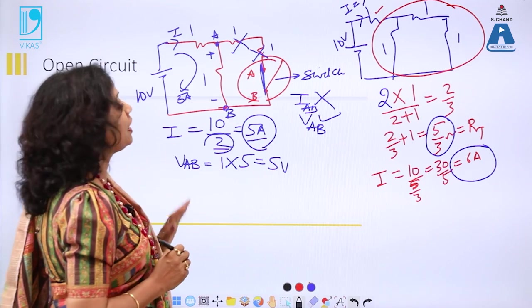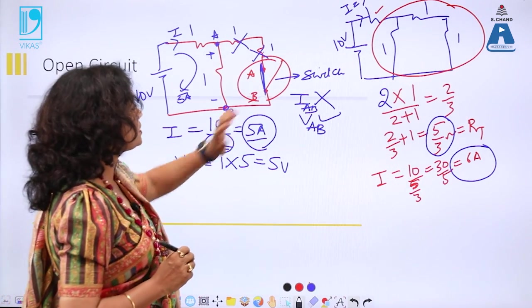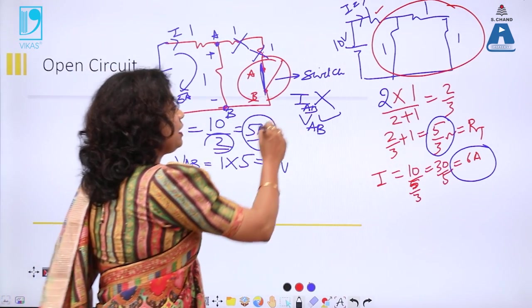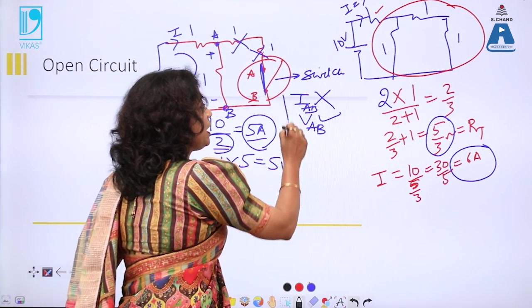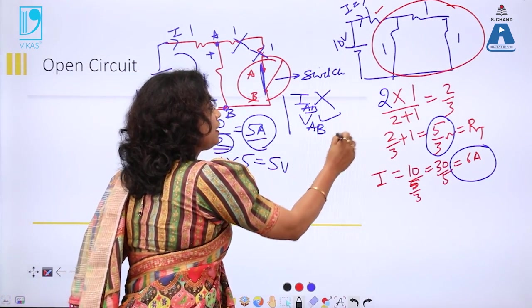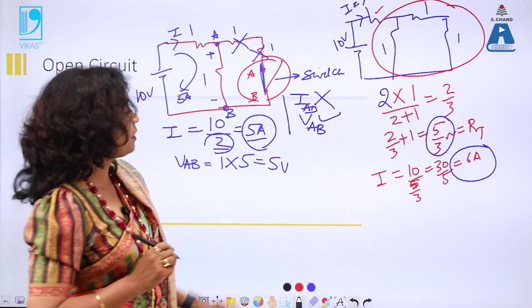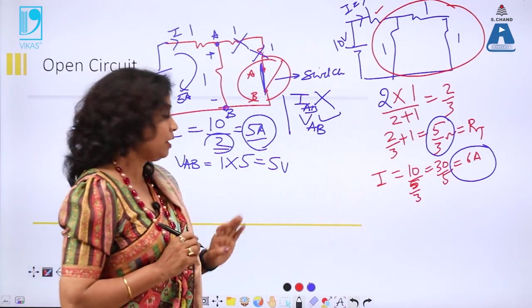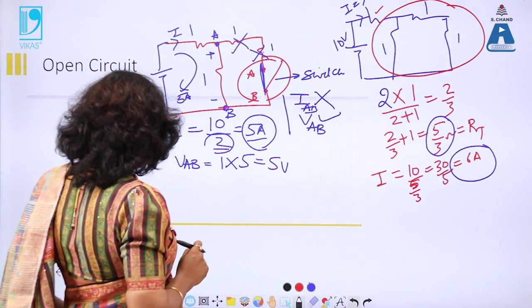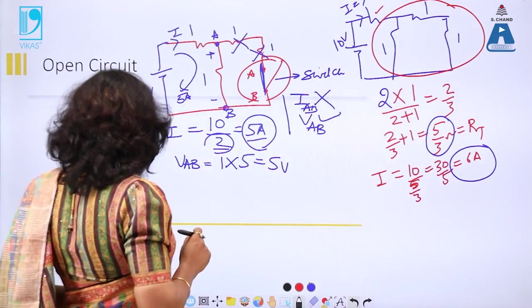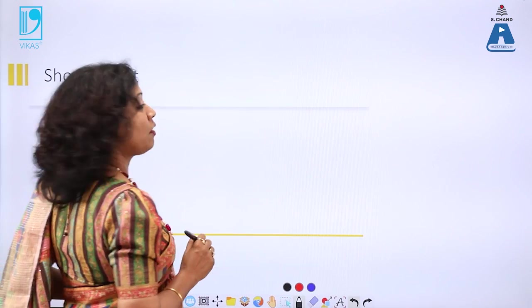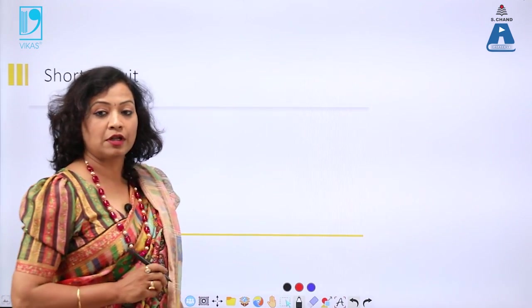To summarize open circuit: there will not be any current, but there can be a voltage. Now let me discuss short circuit.